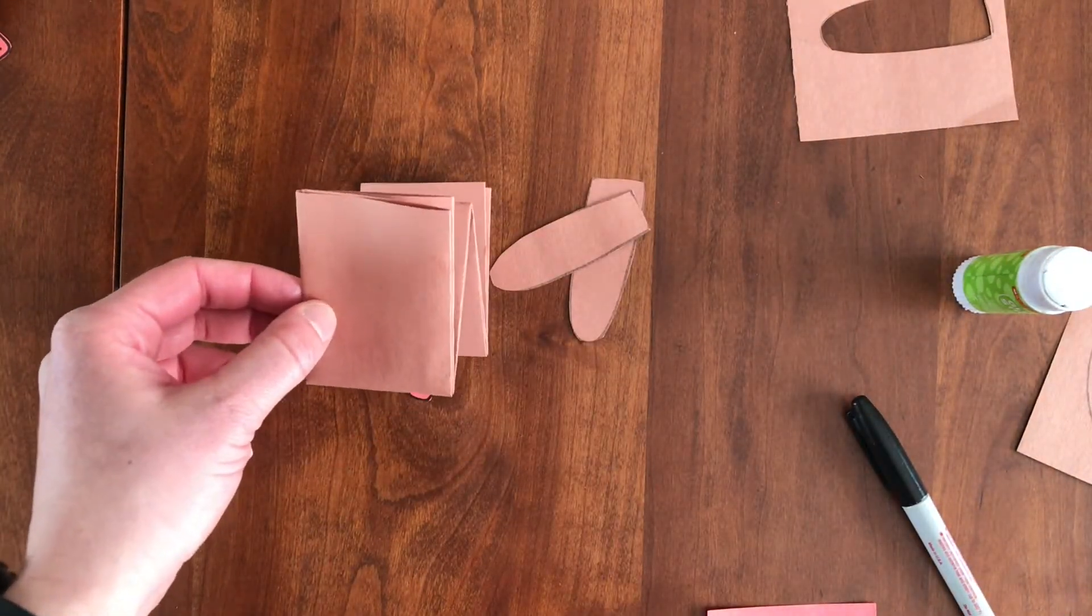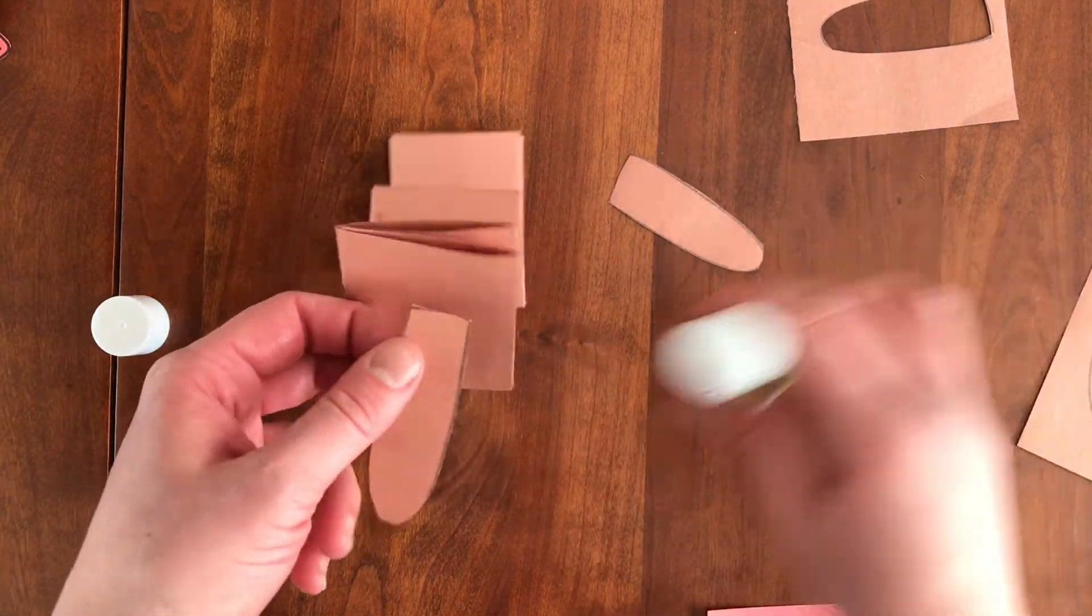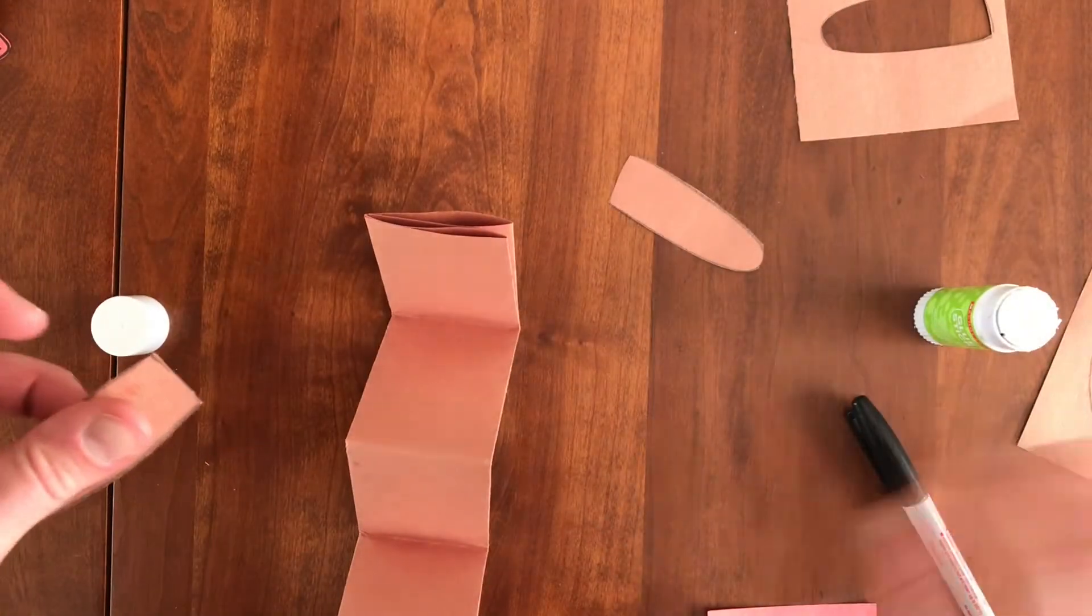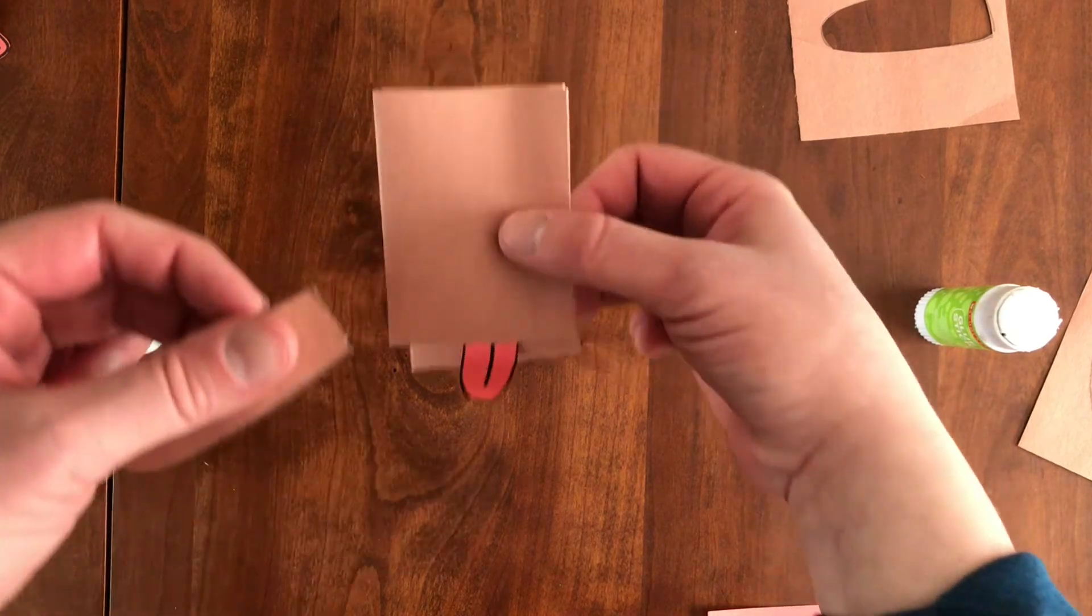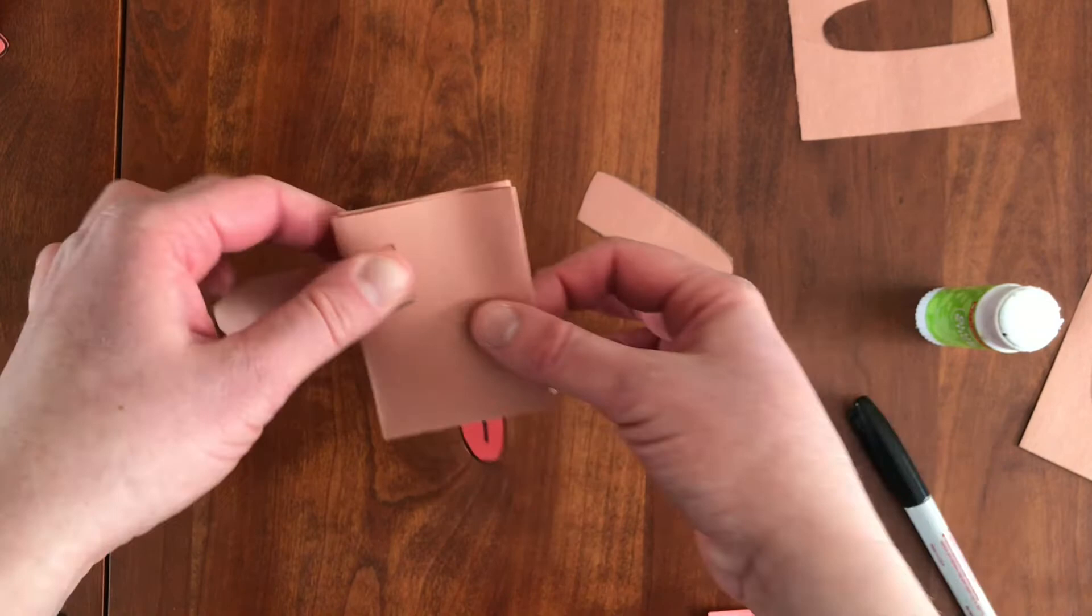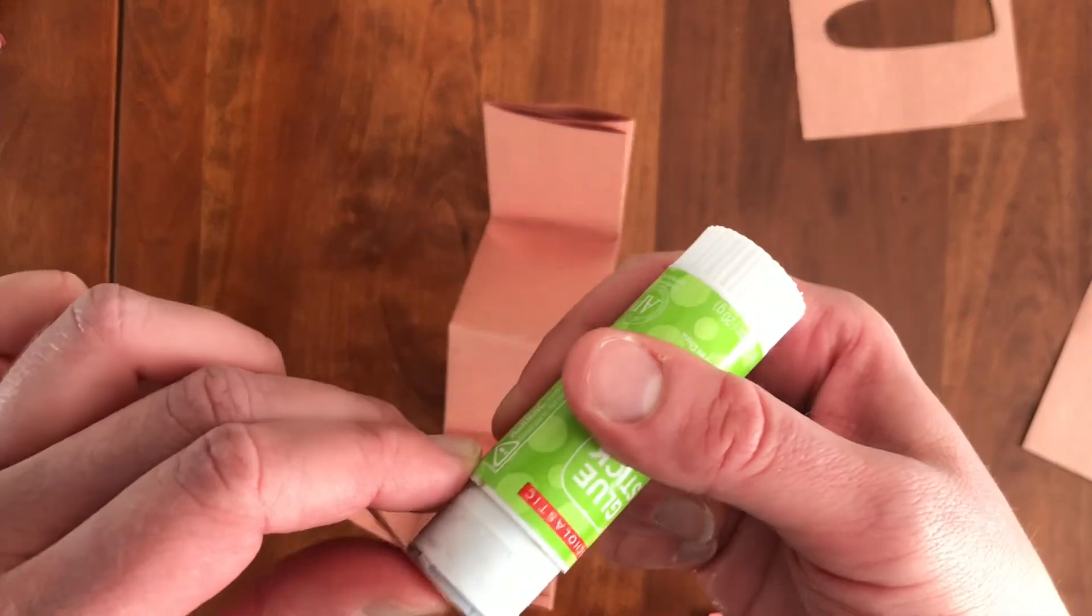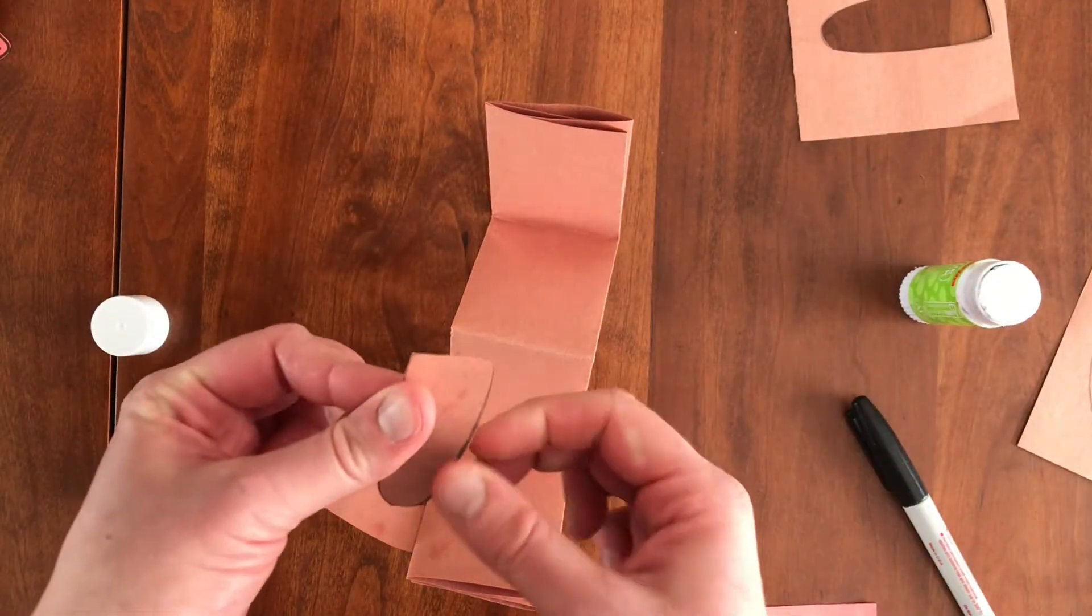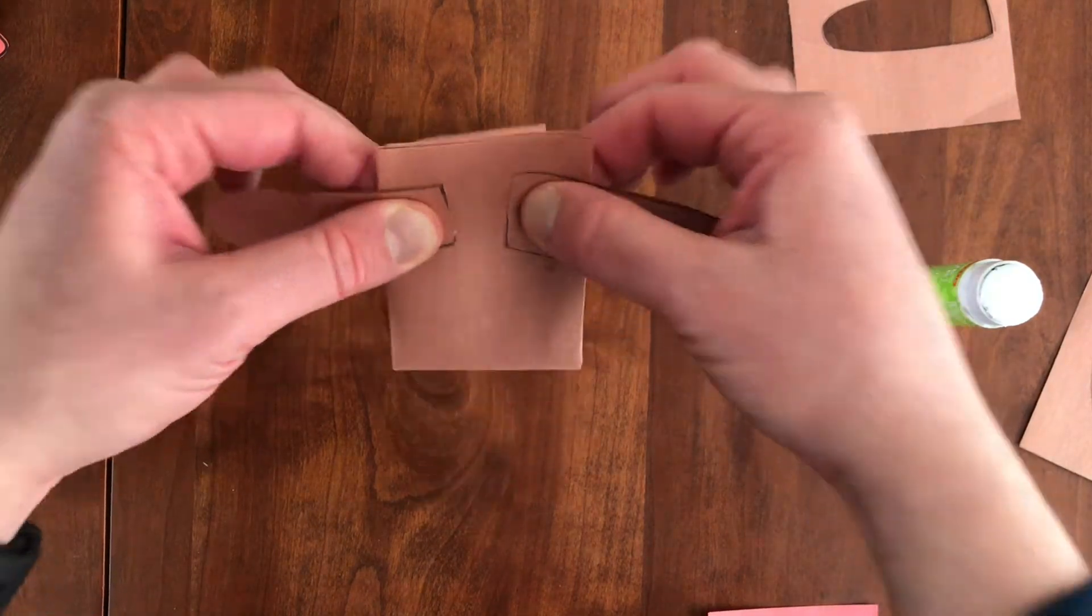All right, now I need to stick the ears on. So I'm going to take these put a little dab just on the edge and then same thing. See where the tongue is on the bottom. Up here on top, I'm going to add an ear. Set it down. Put a little dab on this side. On the other side, I'll add another ear.